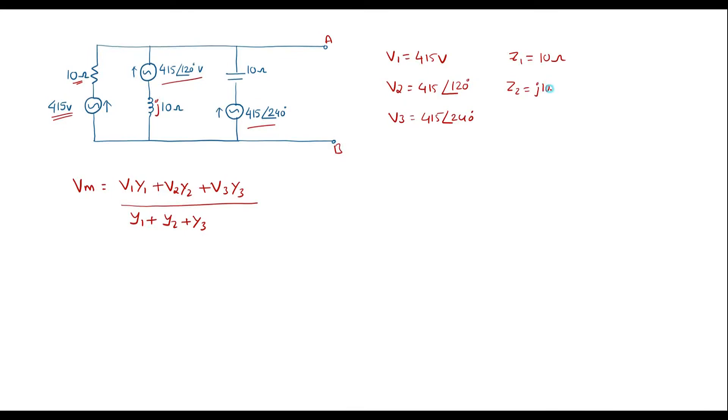Z2 is J10 ohm and this is Z3 that is minus J10 ohm with respect to capacitance minus J with respect to inductance plus J. Z3 is equal to minus J10.